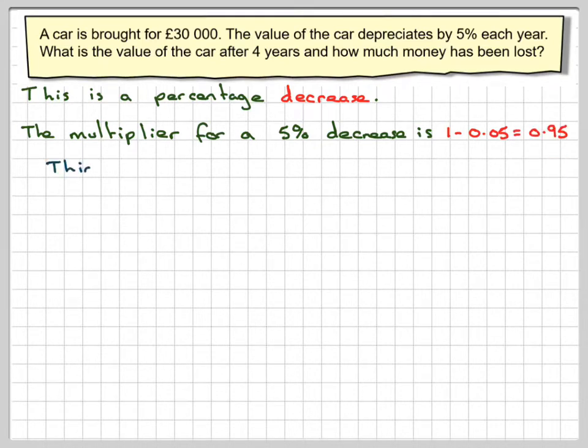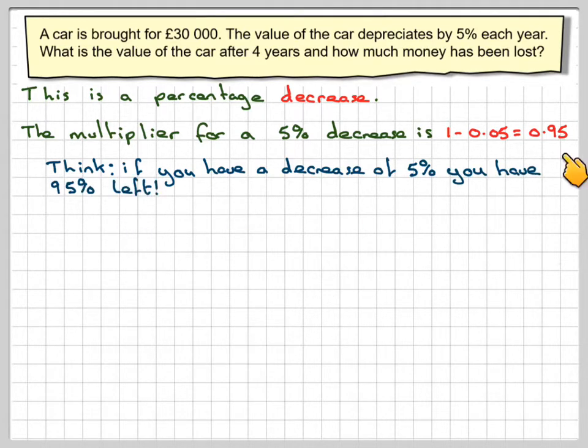So it's better to think, if you have a decrease of 5%, you have 95% left. So that will make sense.